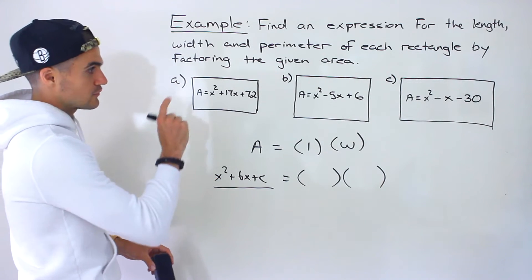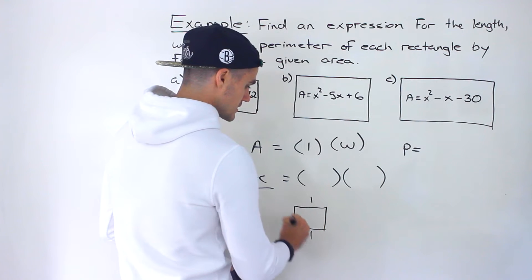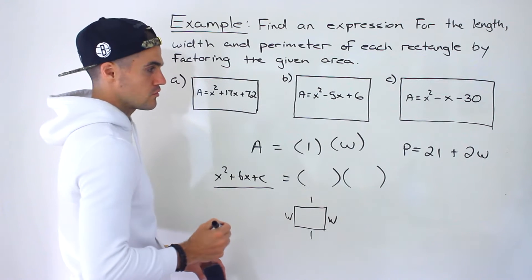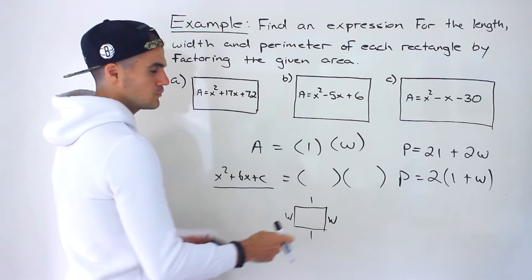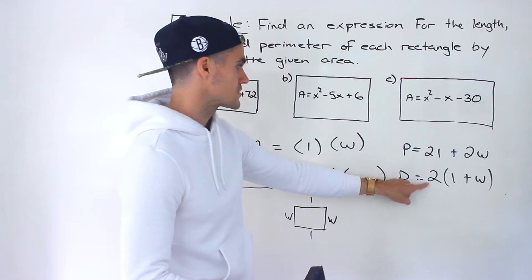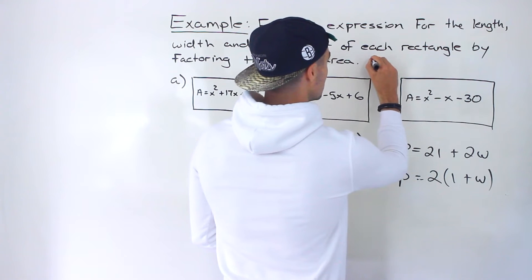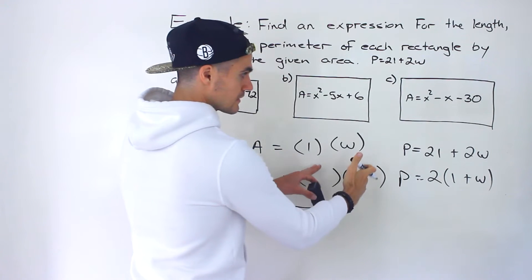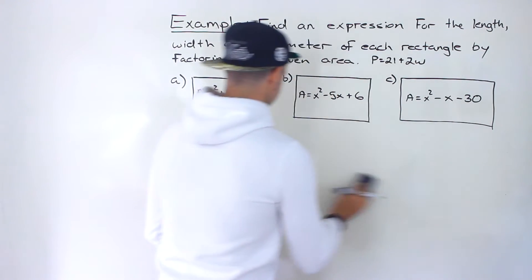We get the length and the width, and then we also have to find the perimeter. The perimeter of a rectangle — if we draw a rectangle there are two lengths and two widths — so the formula is 2L plus 2W. You could also factor out the 2 to get 2 times the quantity L plus W. I'll probably use the 2L plus 2W version, but both give the same answer. So the process is: factor the area to get length and width, then plug into the perimeter formula.